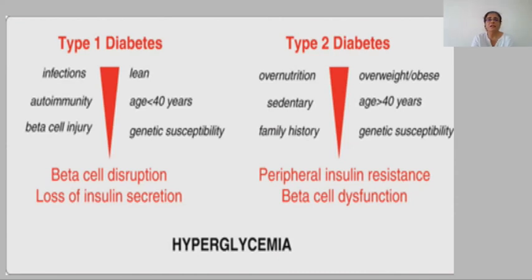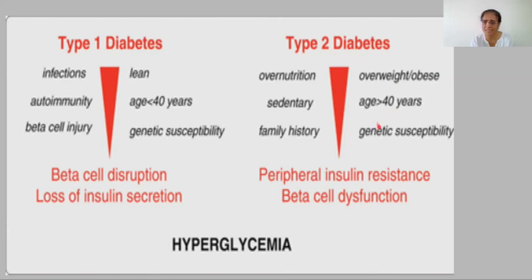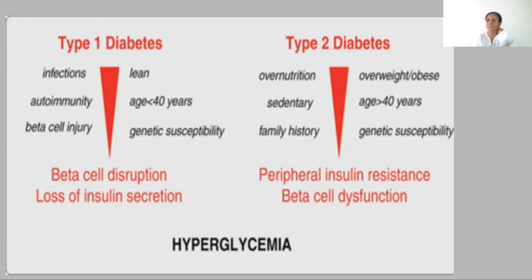Type 2 diabetes is generally seen above 40 years of age. There is genetic susceptibility, peripheral insulin resistance, and beta cell dysfunction — not disruption. The beta cells are not functioning properly but are not destroyed. Initially a doctor may advise external insulin shots, but these can later be weaned away. You should not flog a tired horse — your pancreas is a tired horse — so do not refuse insulin if needed.